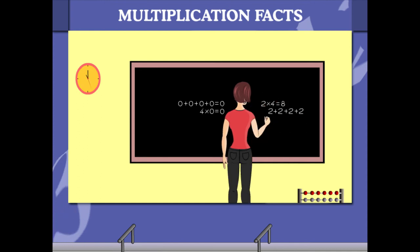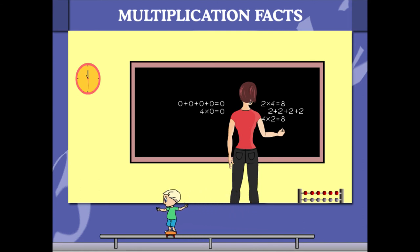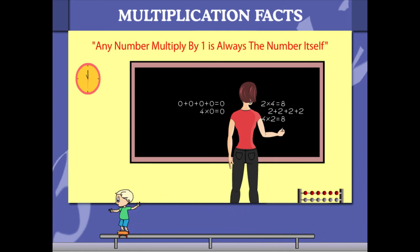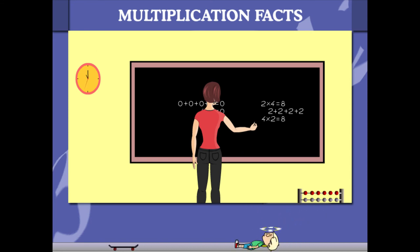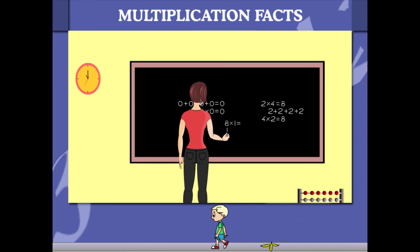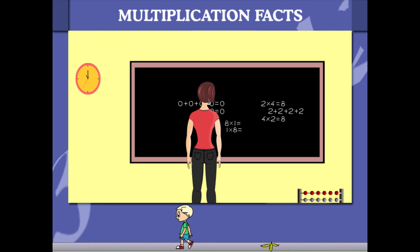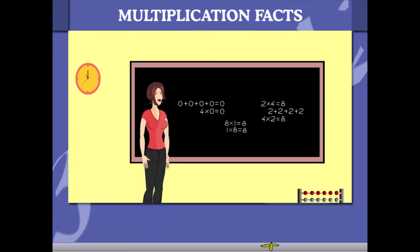What is 4 into 2? It is also 8. Another fact is any number multiplied by 1 is always the number itself. So 8 into 1 is equal to 8, and 1 into 8 is also equal to 8.